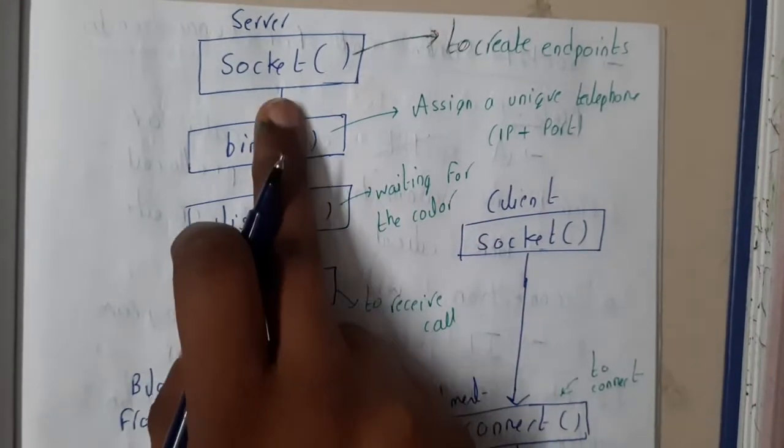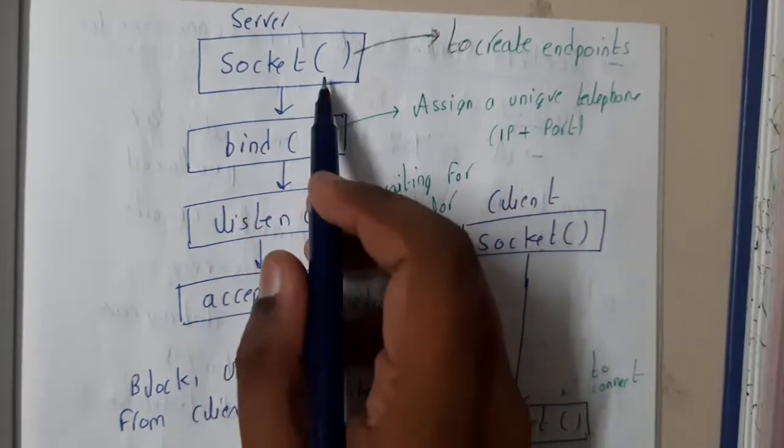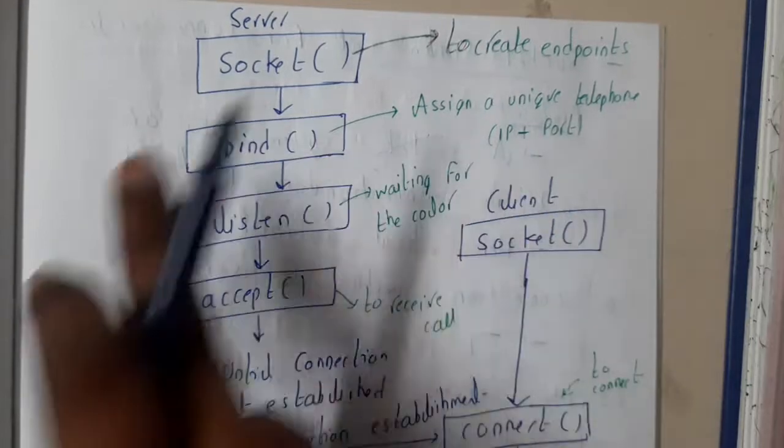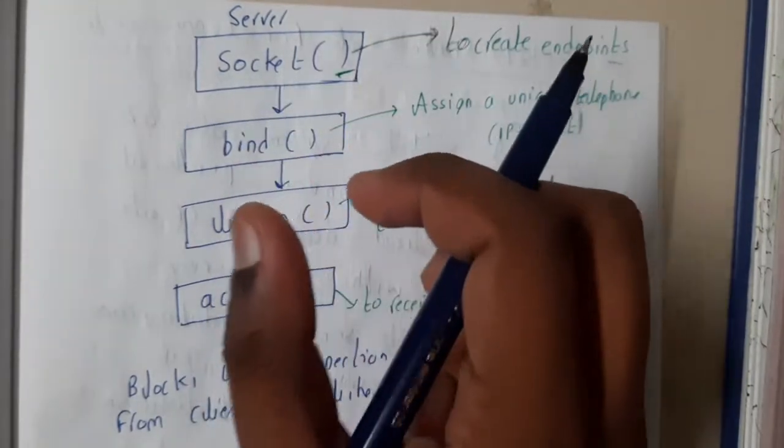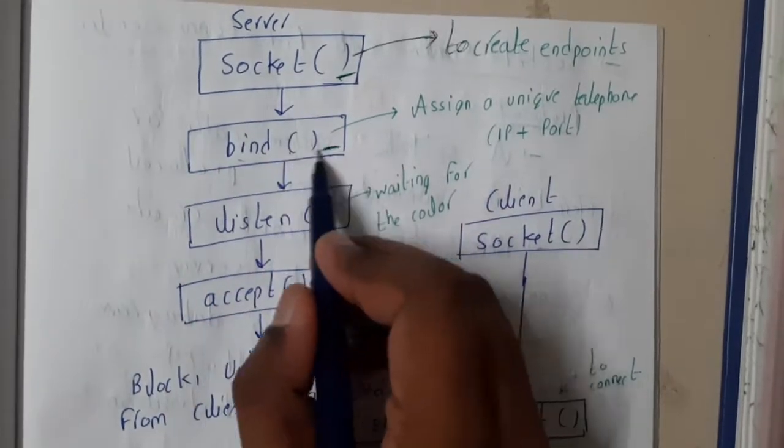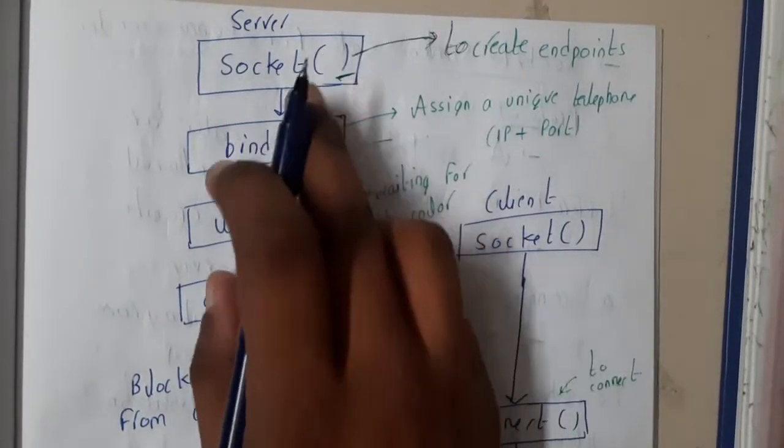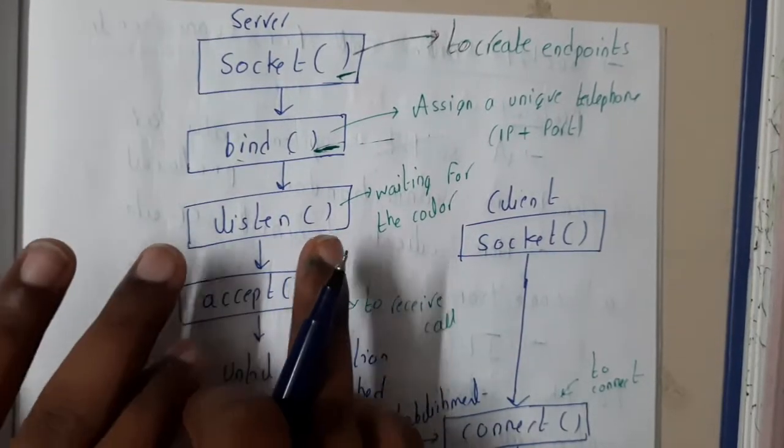Basically initially it is created, that is the socket function. Socket means an endpoint is created with this socket function. Bind is where an IP address is assigned to this socket. After that, the server starts listening.